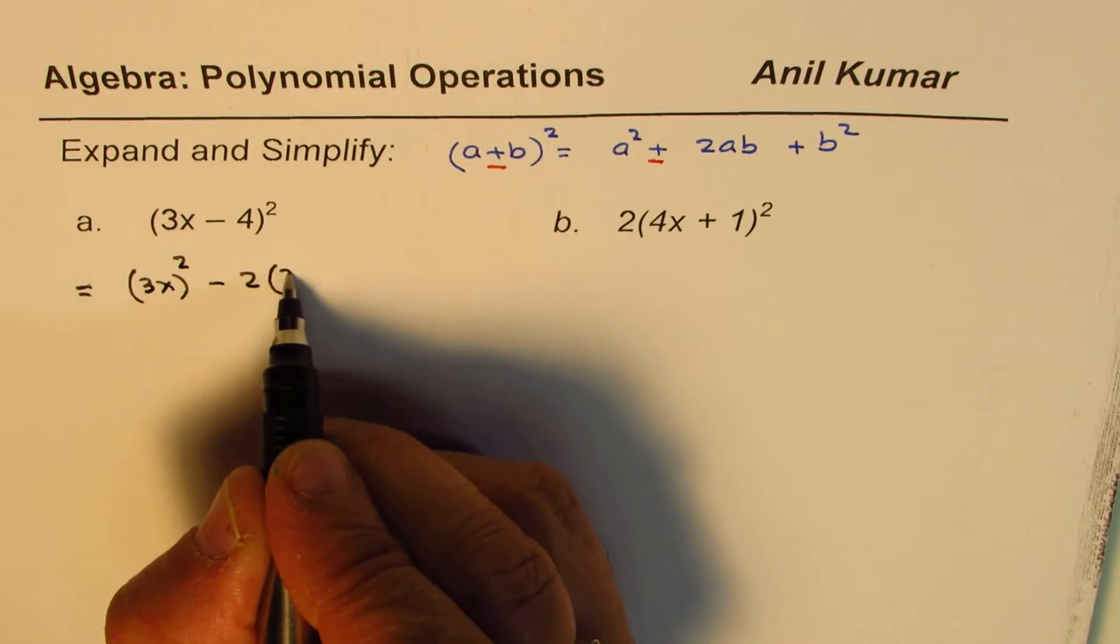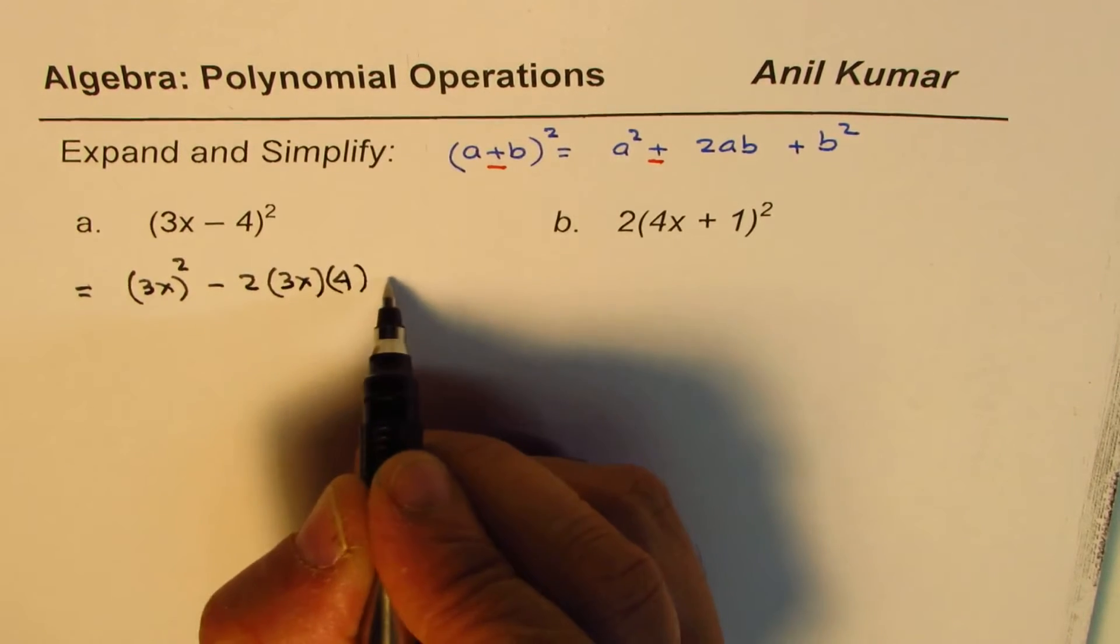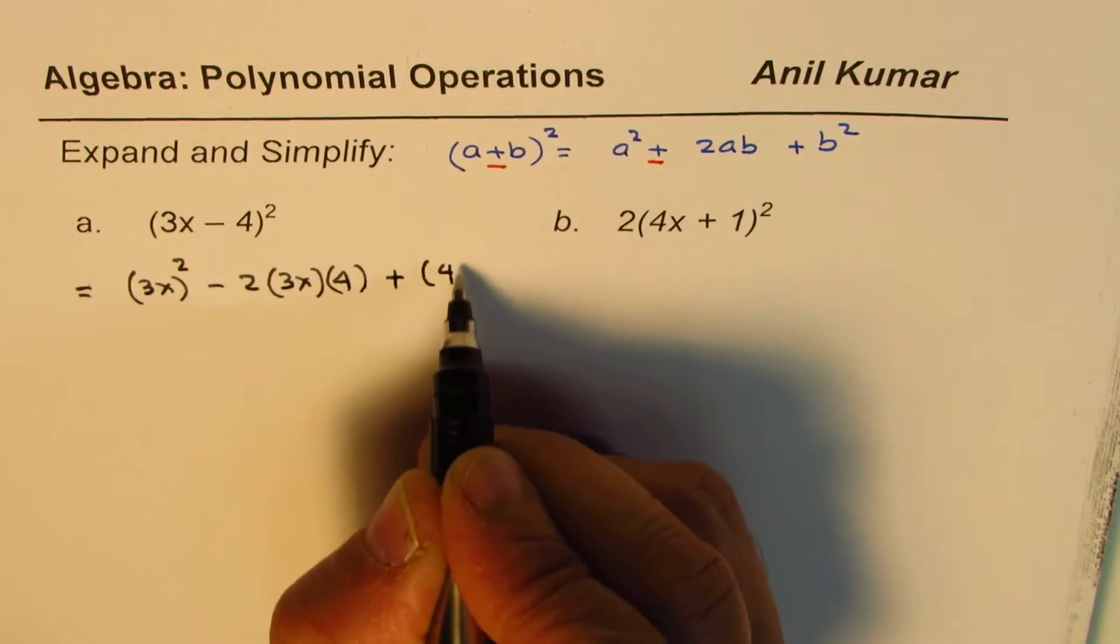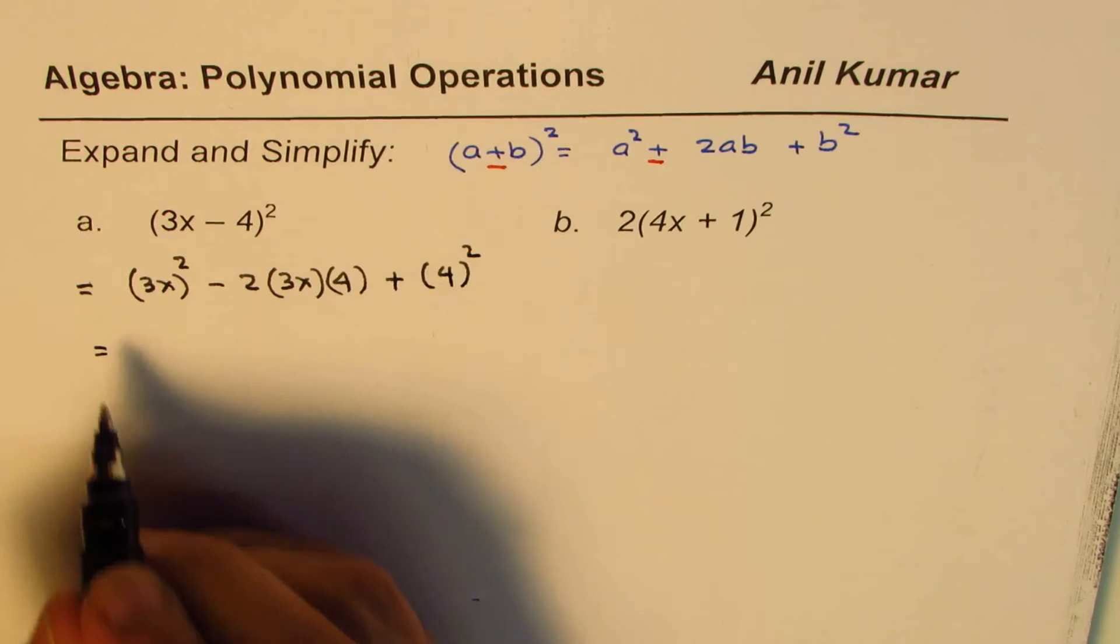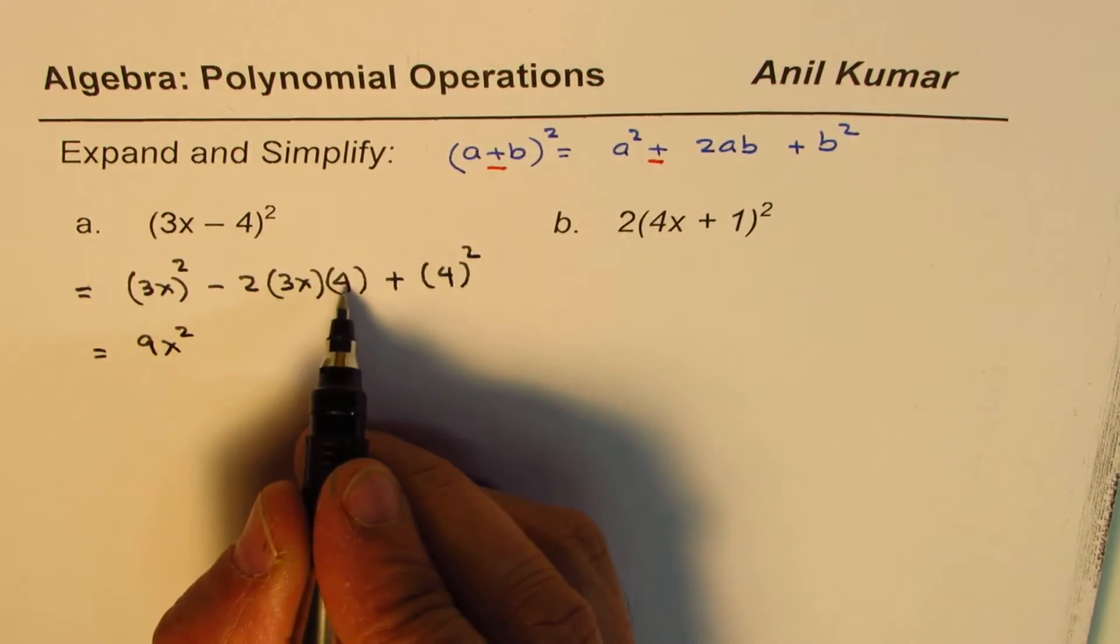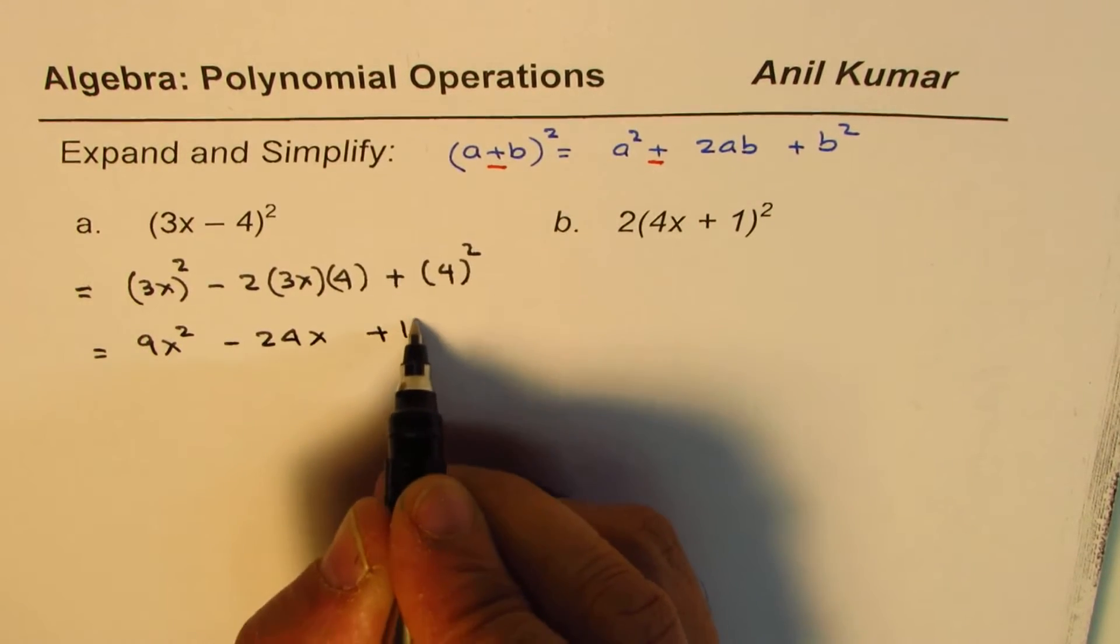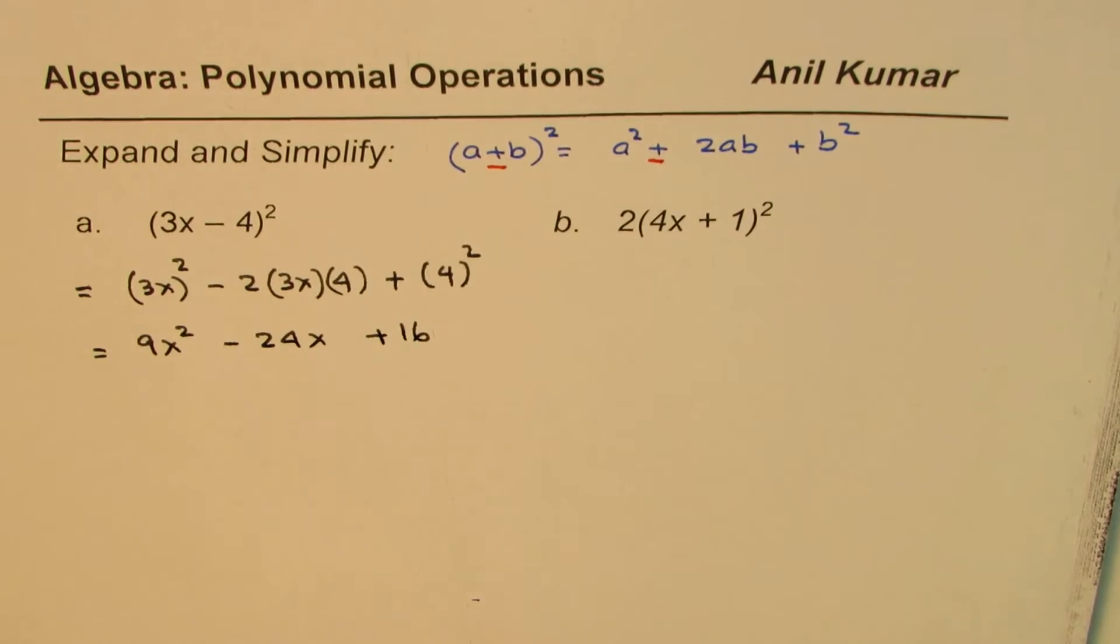Let's put brackets here, plus 4². Right, and that gives you 9x² - 2 times 3 is 6, times 4 is 24x, plus 16. Right, so that is how you're going to do it.